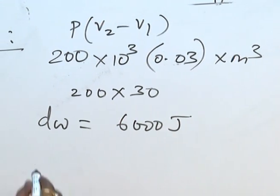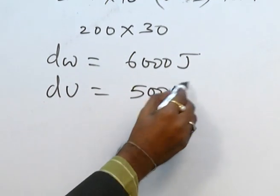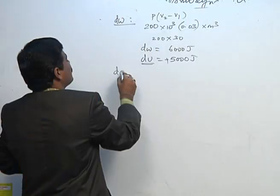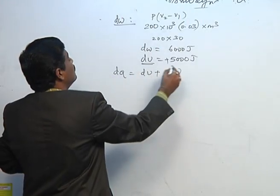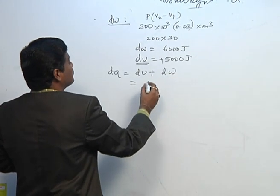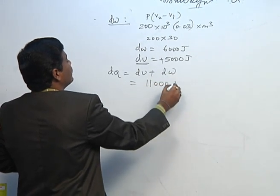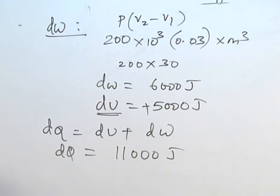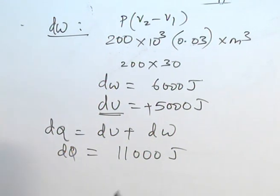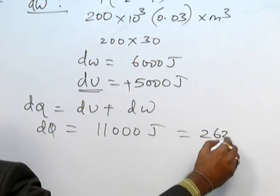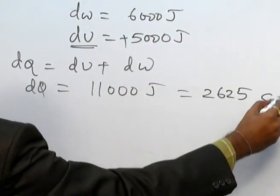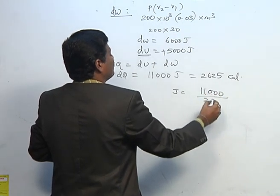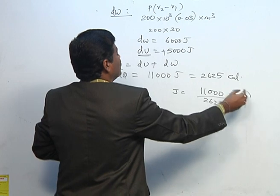The internal energy change is given — it is increased by 5000 joules, so DU is a positive number. Applying the first law of thermodynamics: DQ = DU + DW. DU is 5000 and DW is 6000, so DQ = 11,000 joules. In the question, heat is given as 2625 calories. So J = 11,000 divided by 2625 joules per calorie. This is the J value.